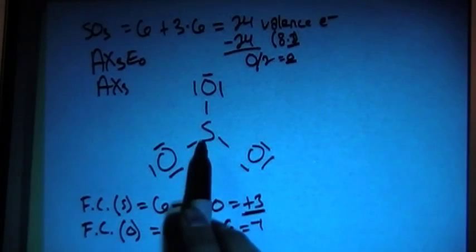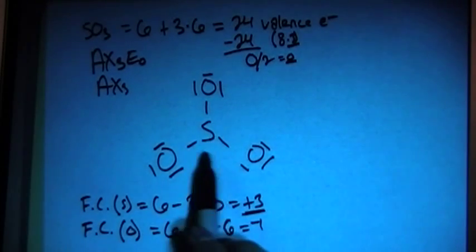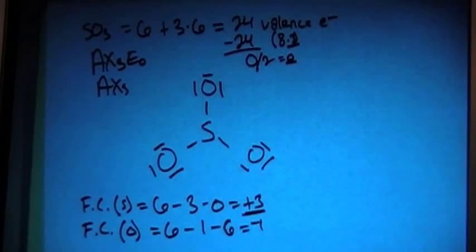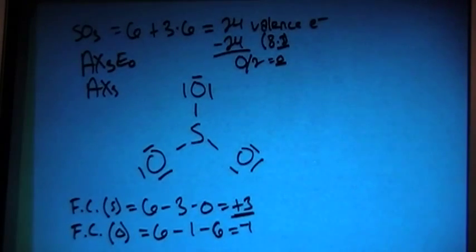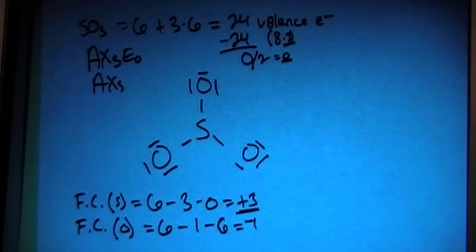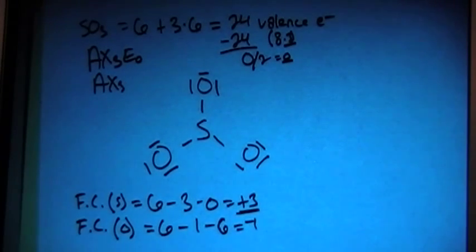Also, if you notice, the sulfur does not have a full octet. It only has 6 electrons. And since sulfur is in the third period of the periodic table, it has access to the d orbitals, so it could actually hold 6 bonds, or 12 electrons.